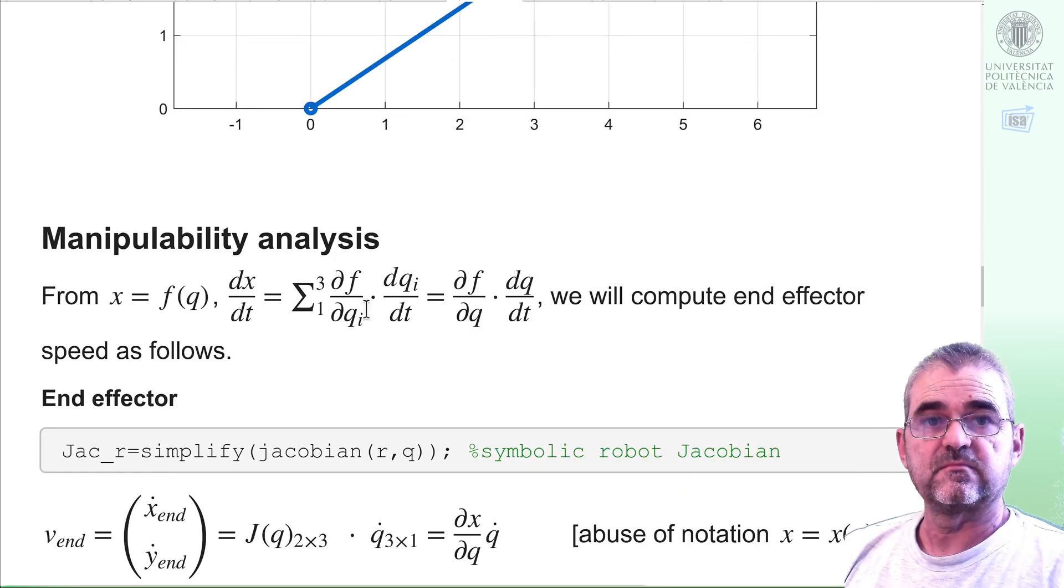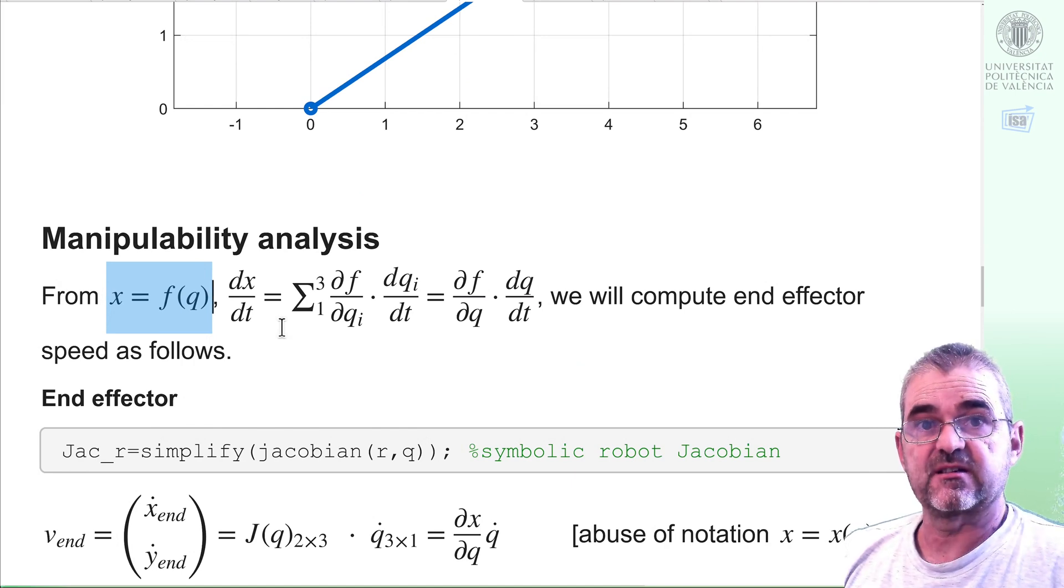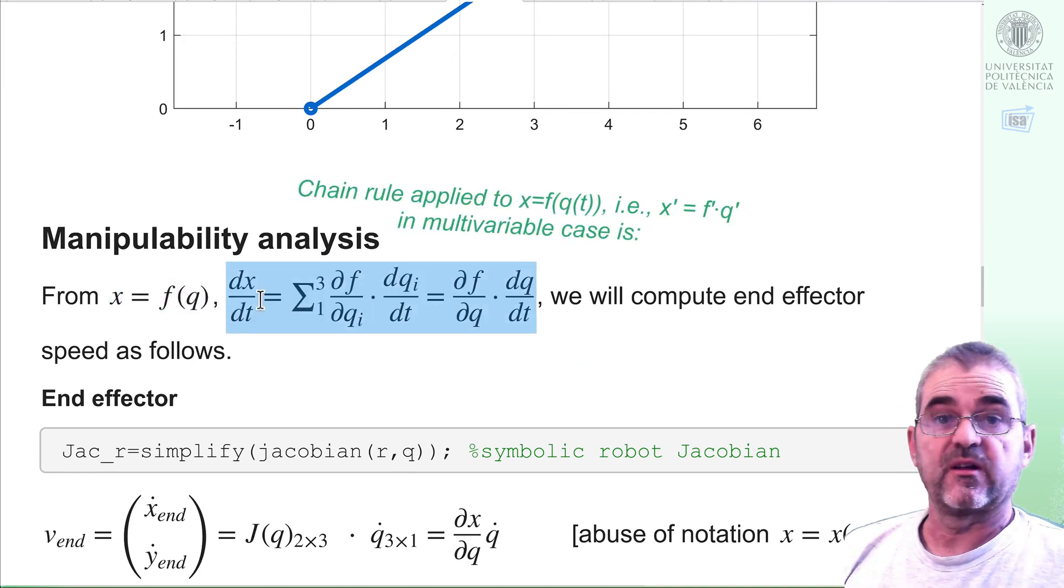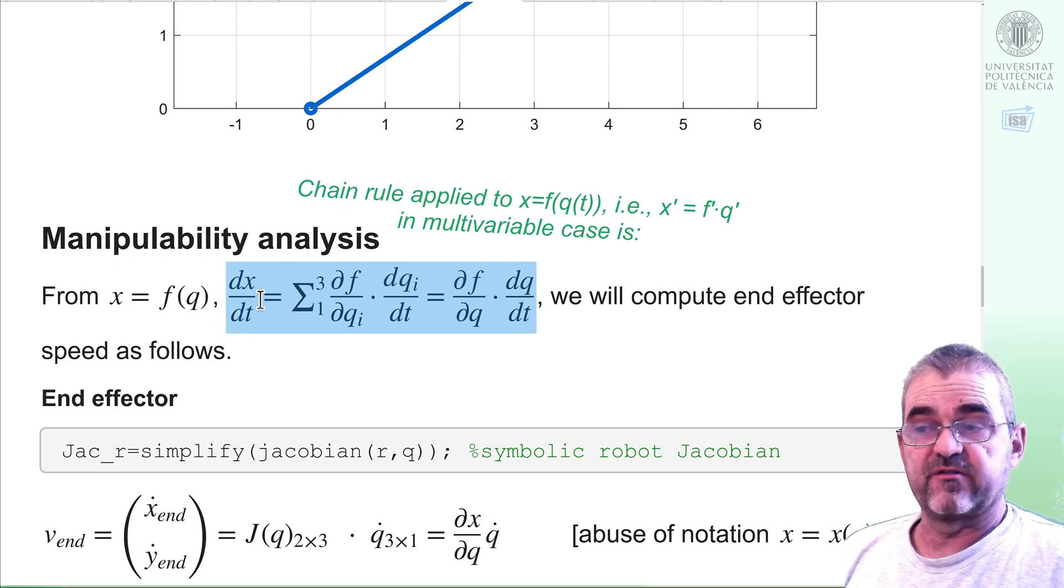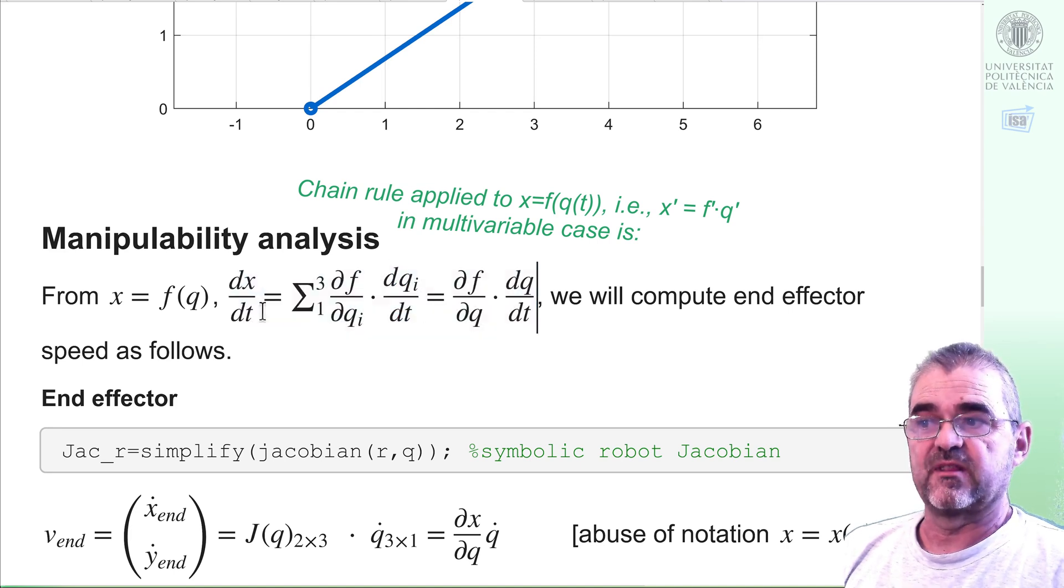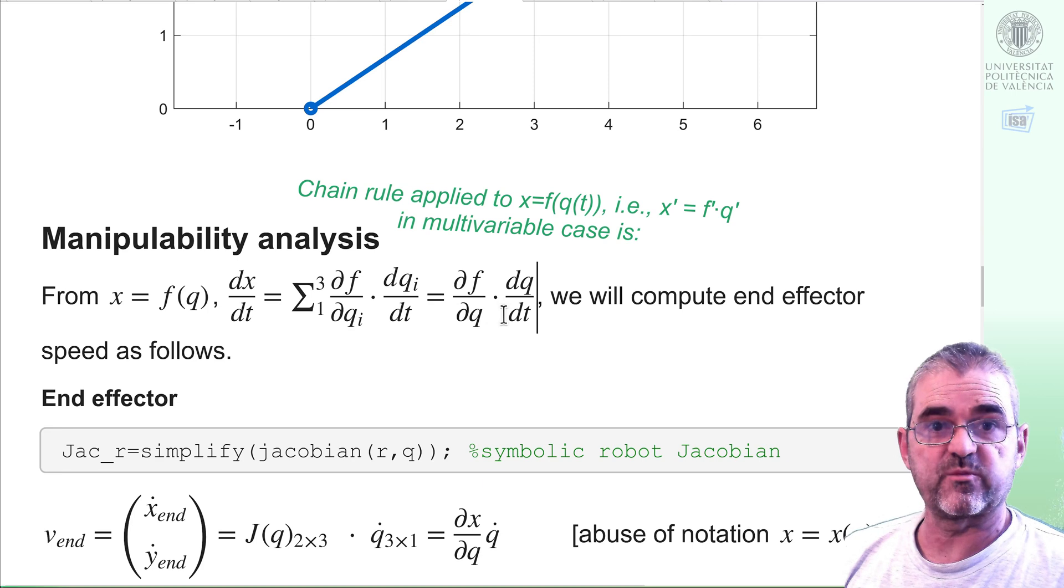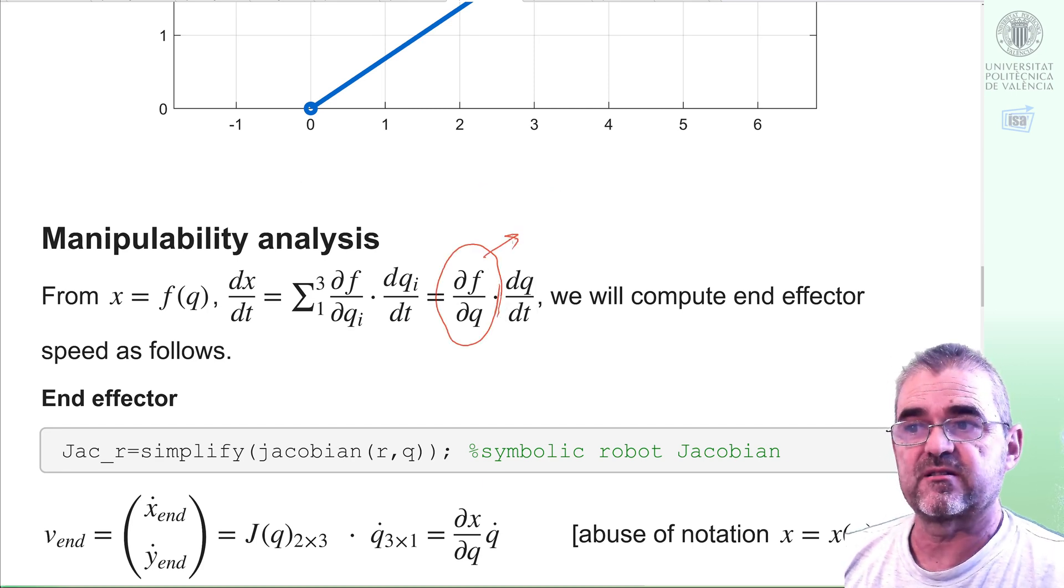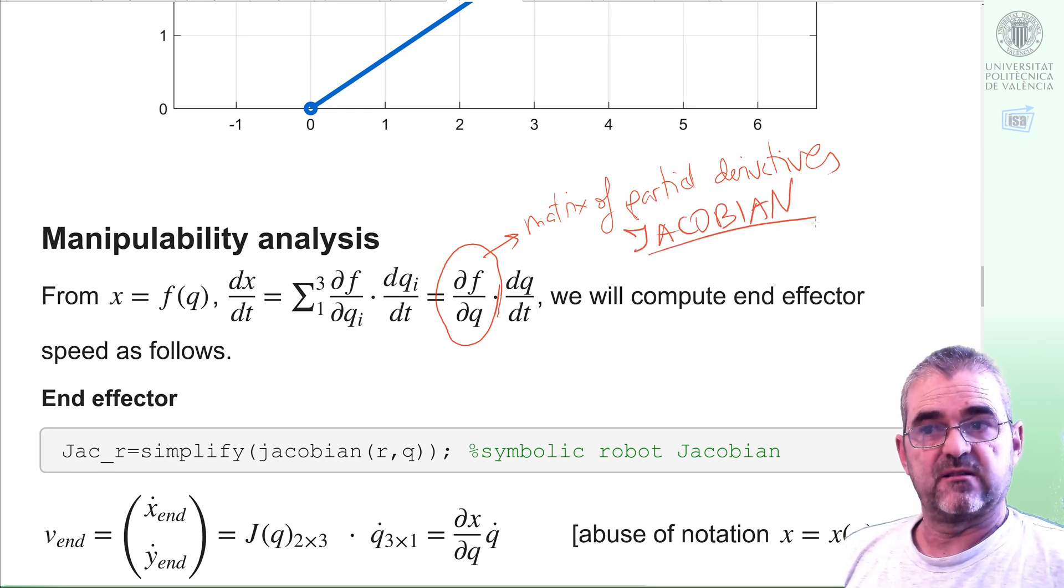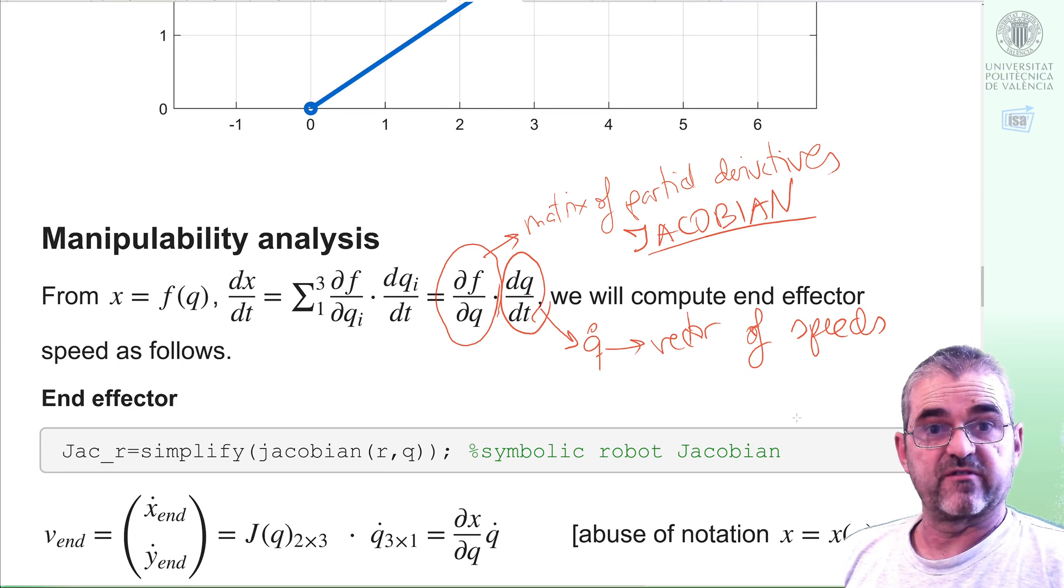Let us go with defining what the hell that manipulability is about. The basic idea is that if I have some function x or y, function of these angles q, then its time derivative will be given by the chain rule: the partial of f with respect to each of the arguments times the actual time derivative of these arguments. This summation of partial derivatives times velocities will be summarized with this expression in which this is a matrix of partial derivatives usually called J, the Jacobian. This is a vector of the speeds of the arguments of f, which in our case as q are angles, this will be a vector of angular speeds.